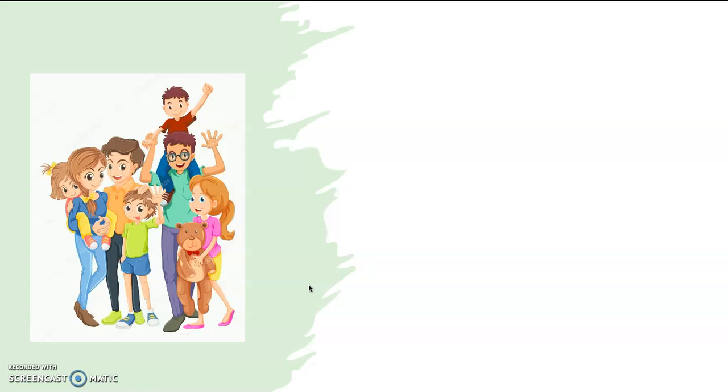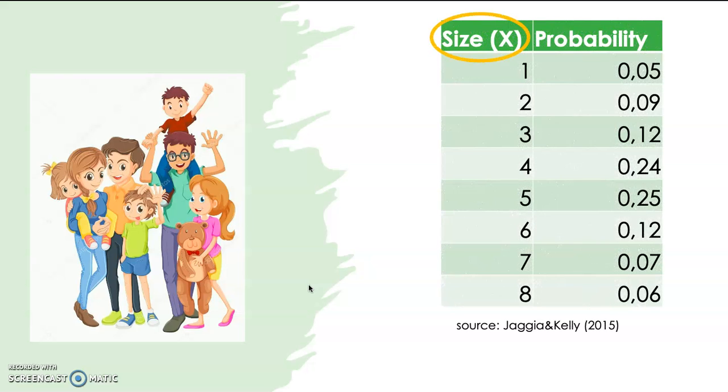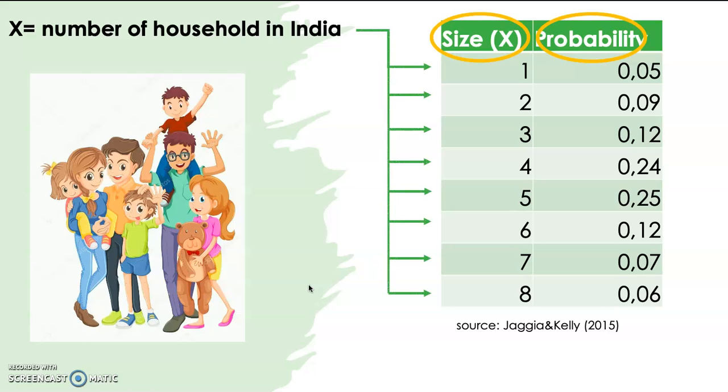Let us try again to define this random variable from the case we have here. India is the second most populous country in the world, with a population of over 1 billion people. Although the government has offered various incentives for population control, some argue that the birth rate, especially in rural India, is still too high to be sustainable. The table shows the size of household and the probability distribution for the household size in India. A random variable is the number of household, which is defined between 1 to 8. And the next column here shows the probability of each number of household to happen.